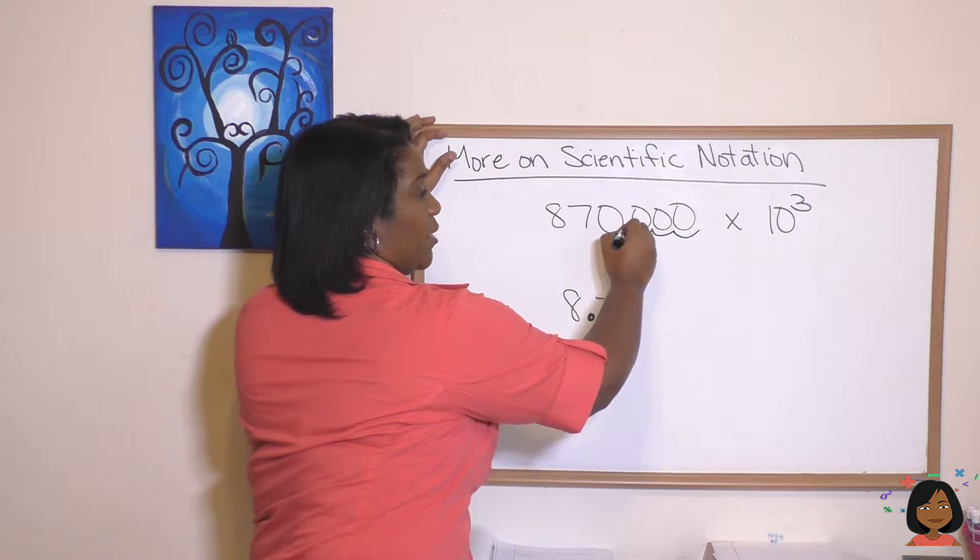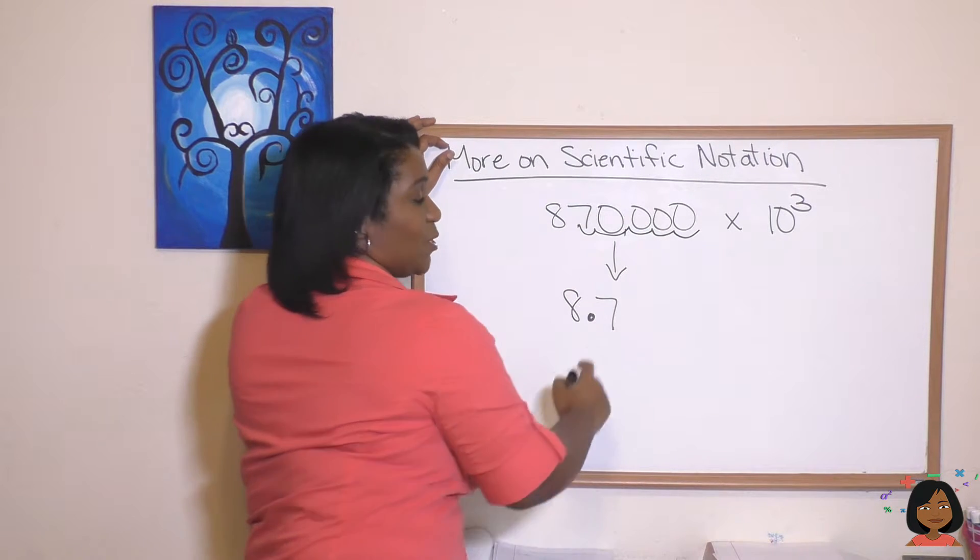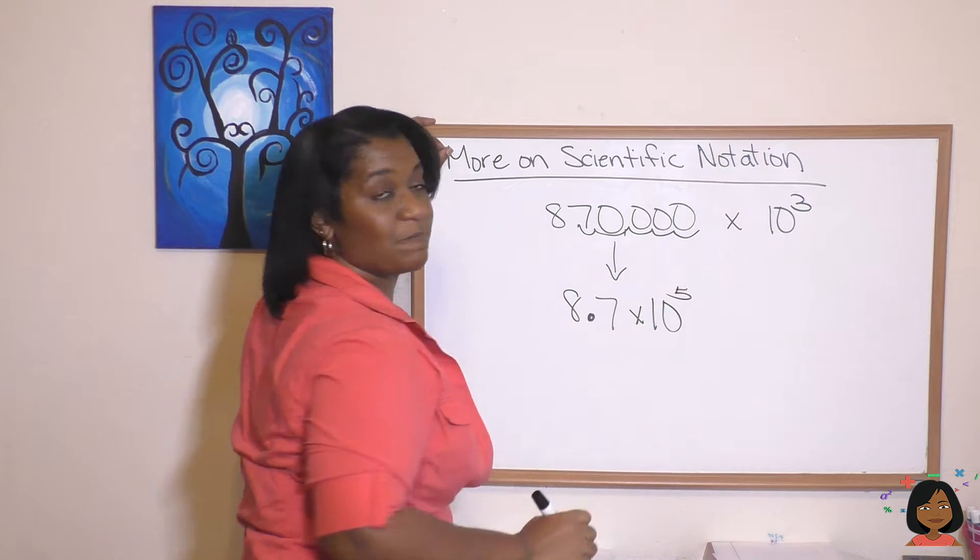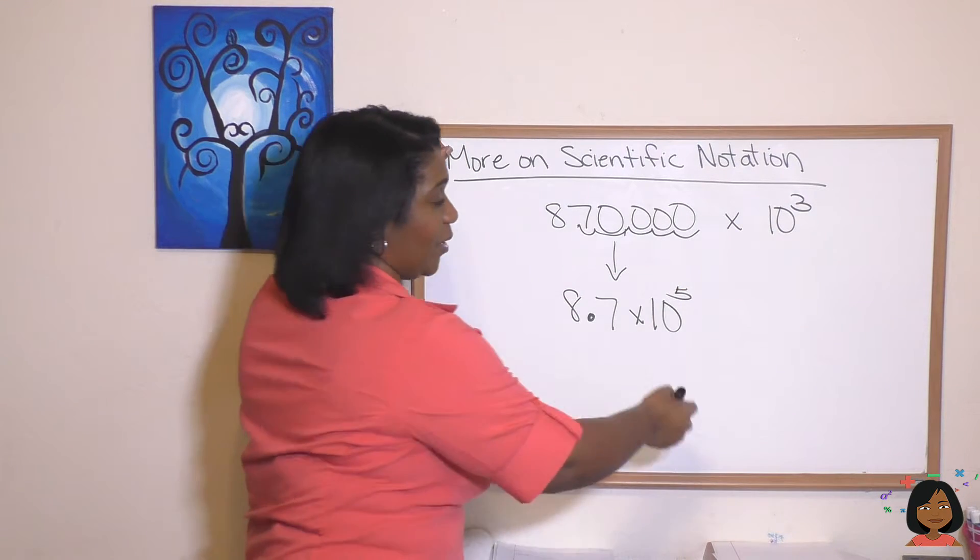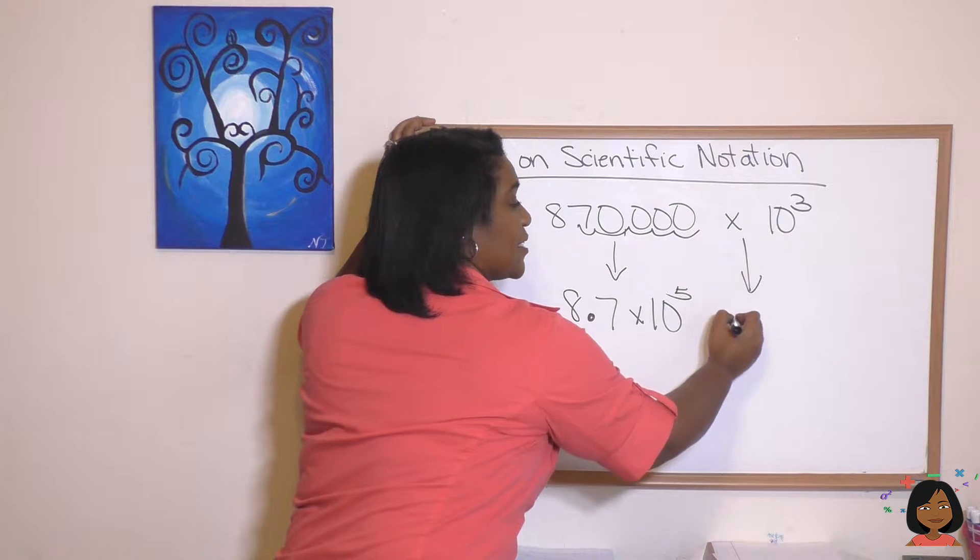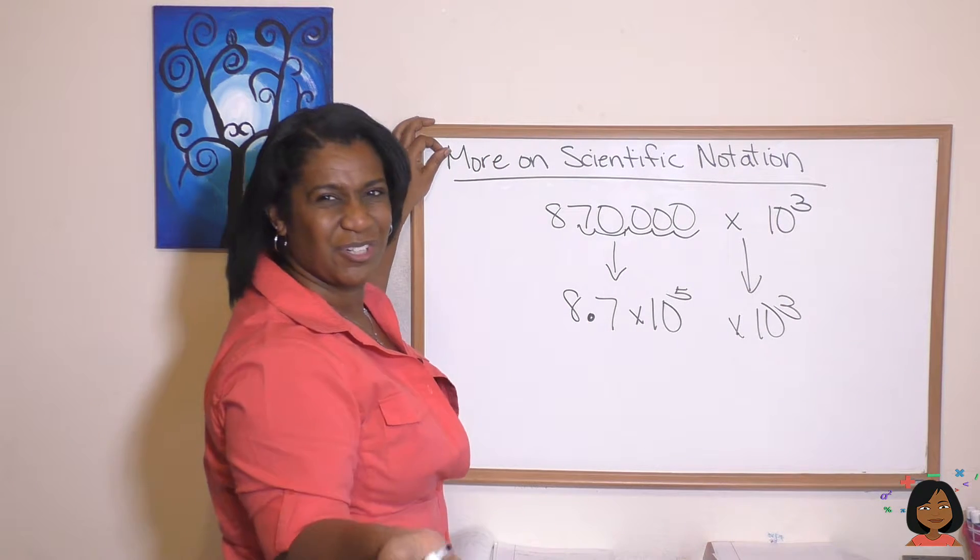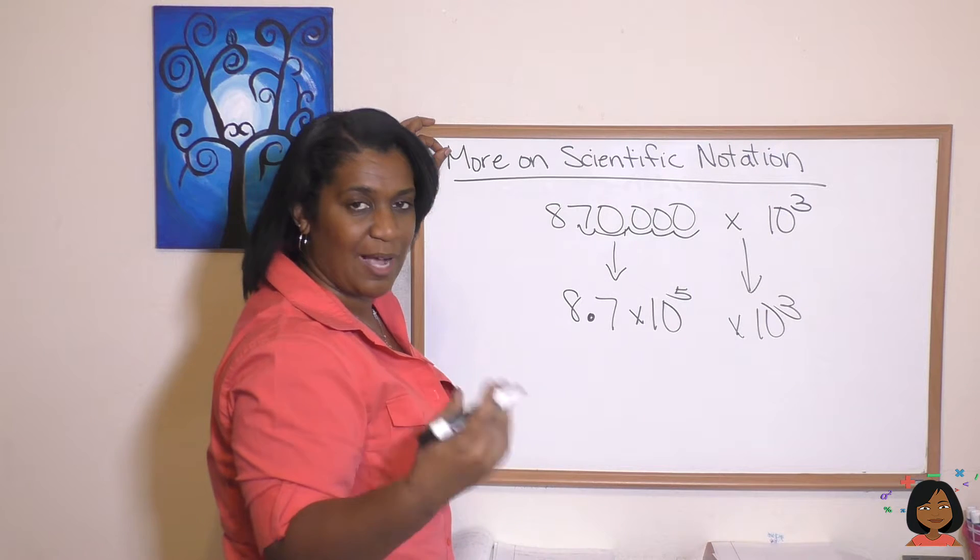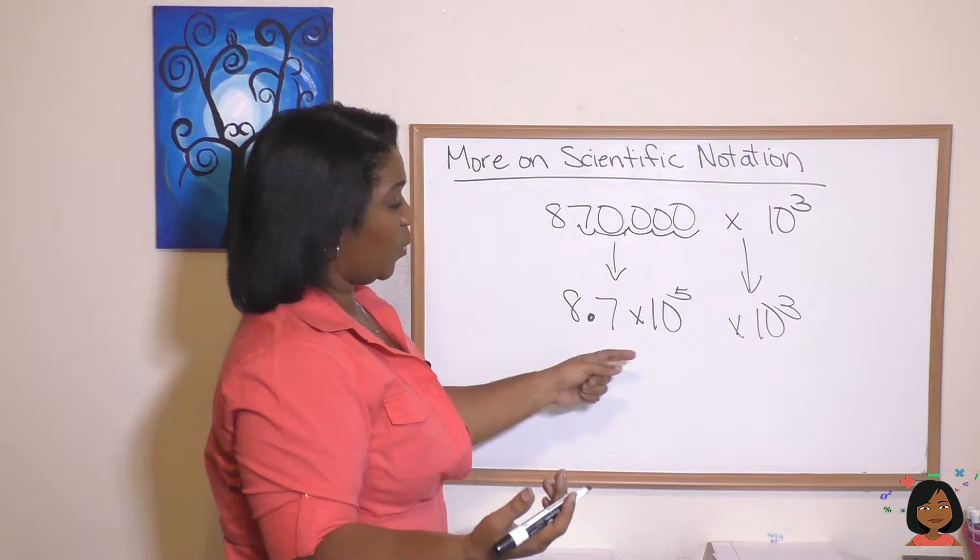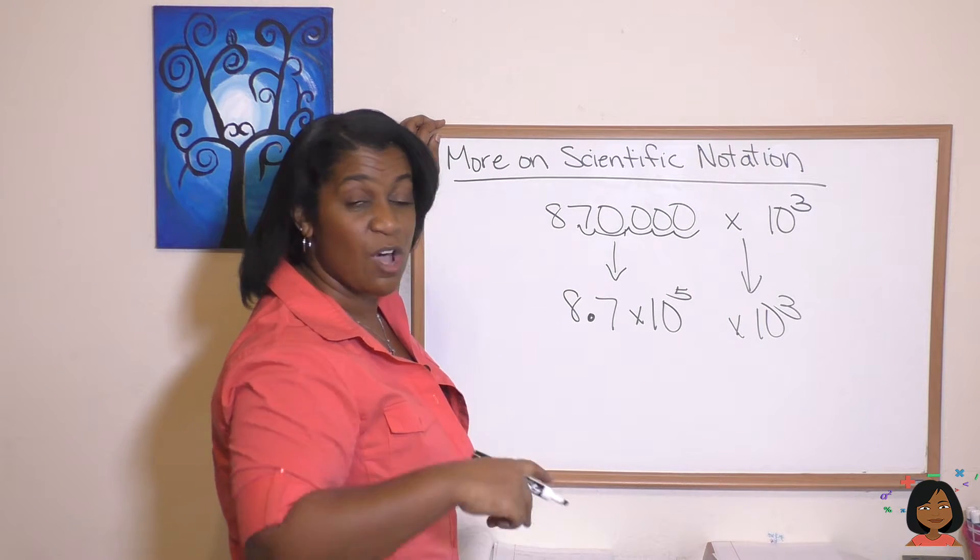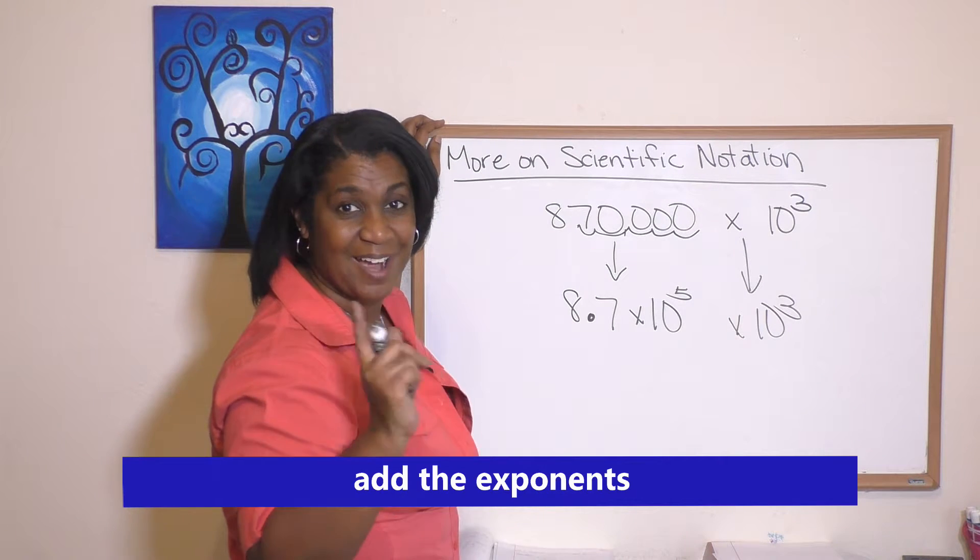So this would be 8.7 times ten to the fifth, and now we want to do our times ten to the third. Well, the good news is, if you remember, we talked about some rules of exponents. When we are multiplying these bases of ten with the exponents, all we have to do is add our exponents.